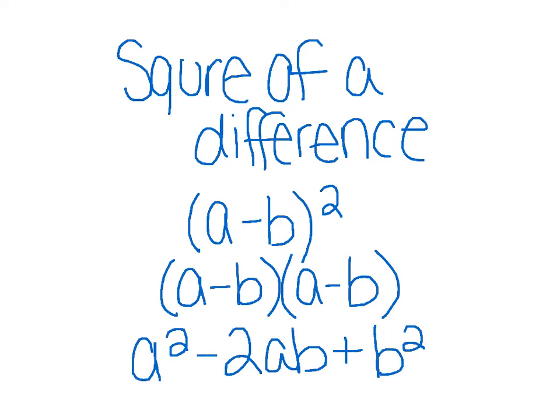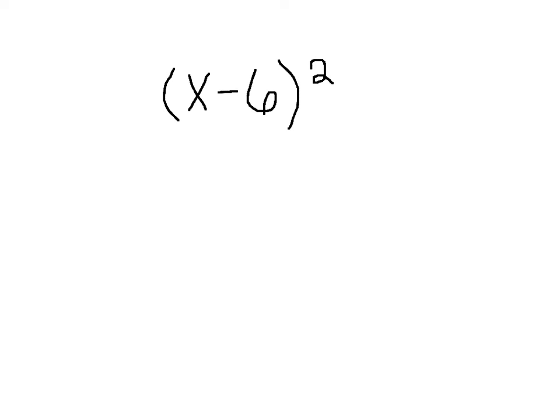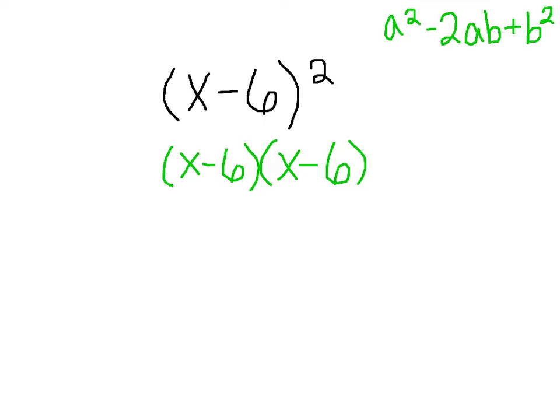Now remember, the hardest thing about this is a is a number or variable, b is a number or variable. This minus here is being taken into account with this minus. So don't make this b a negative, because that will change your answer completely. Now let's look at an example. We have x minus 6 squared. This is the same thing as x minus 6 times x minus 6. Because this is a minus, it's going to be a squared minus 2ab plus b squared. So my first hint would be to write out what is a, what is b.